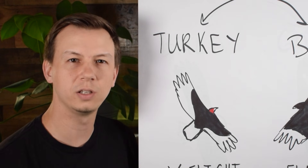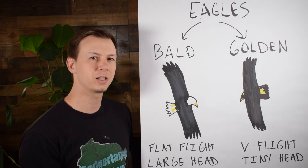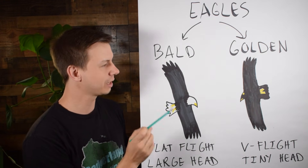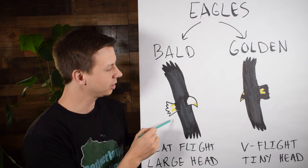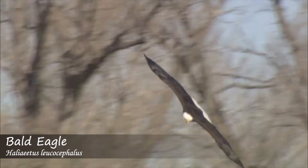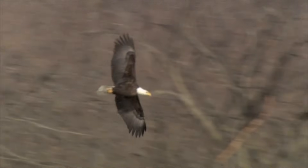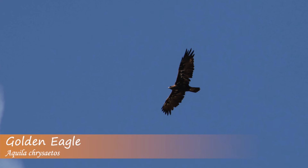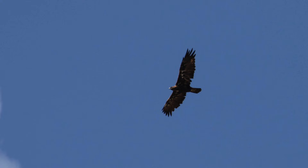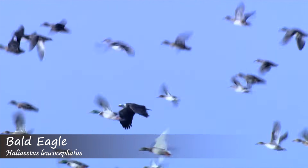Now let's move on to the eagles — the bald eagle and the golden eagle. Interestingly, like the vultures, one flies with a dihedral and one flies with flat wings. The bald eagle is going to have flat flight with wings flattened out, while the golden eagle flies with a slight dihedral or v-shape. Additionally, the golden eagle is going to look like it has a really small head compared to its body and will have a golden nape. The adult bald eagle is iconic — bright white head and bright white tail feathers.